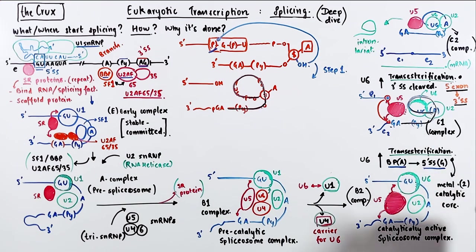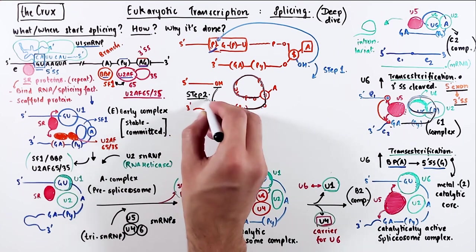In the second step of transesterification, the 5' end of the exon, which has a free hydroxyl group at the third carbon, attacks the 3' splice site. Specifically,